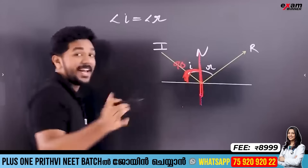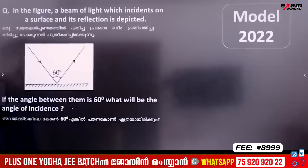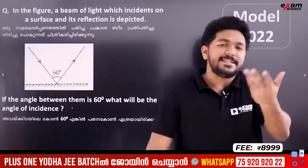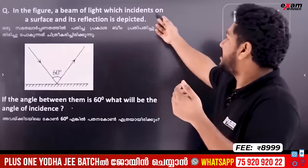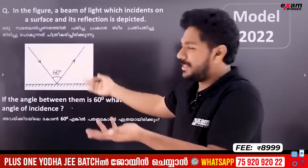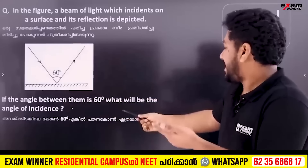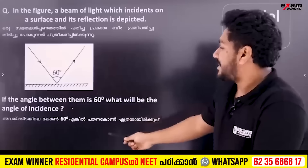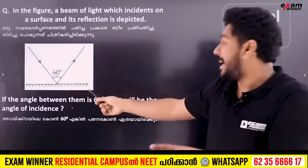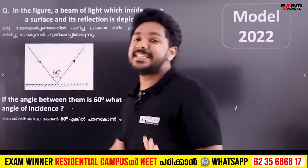For example, if you see a model, it is simple. Look at this figure — a beam of light which is incident on the surface is reflected as depicted. If the angle between the incident ray and reflected ray is 60 degrees, what will be the angle of incidence? Every single angle between them is 60 degrees. There is an angle of incidence.